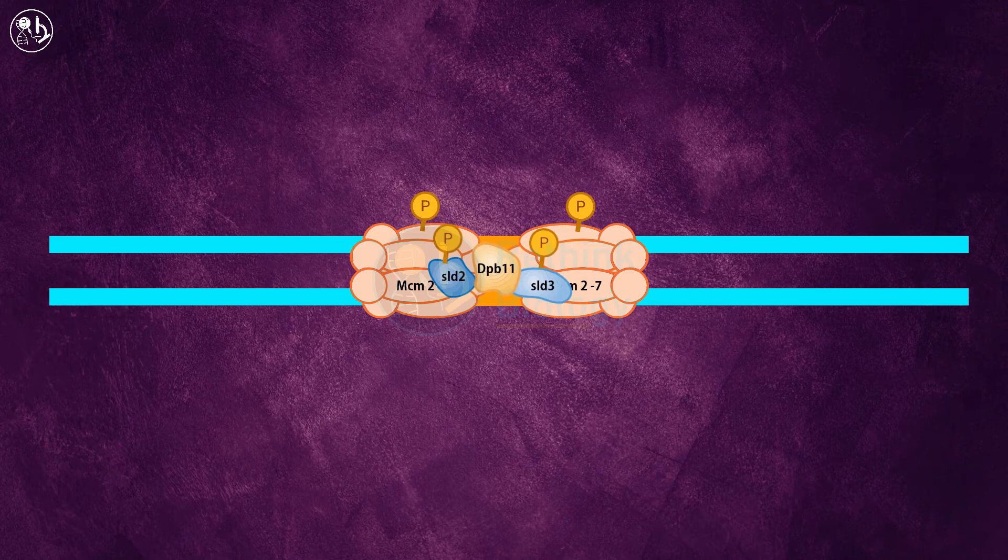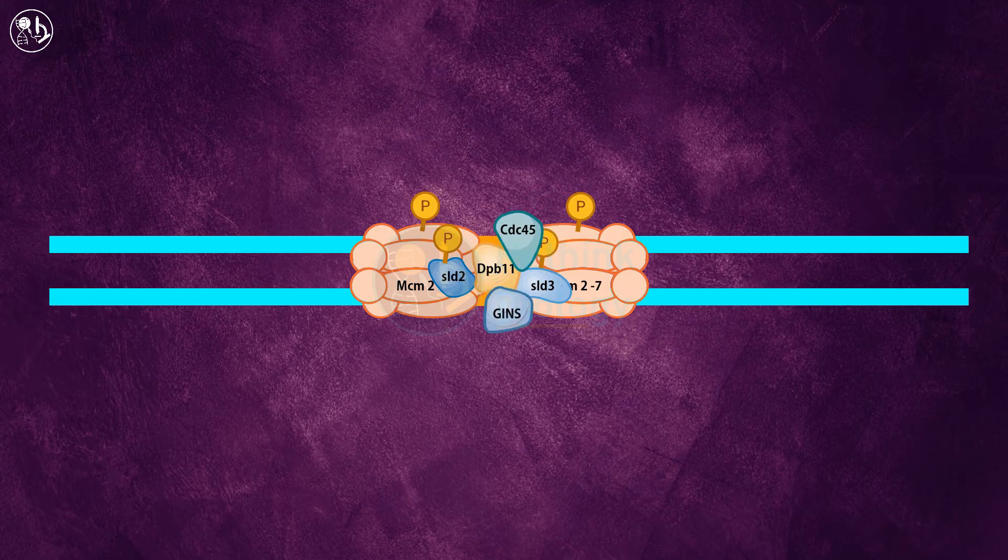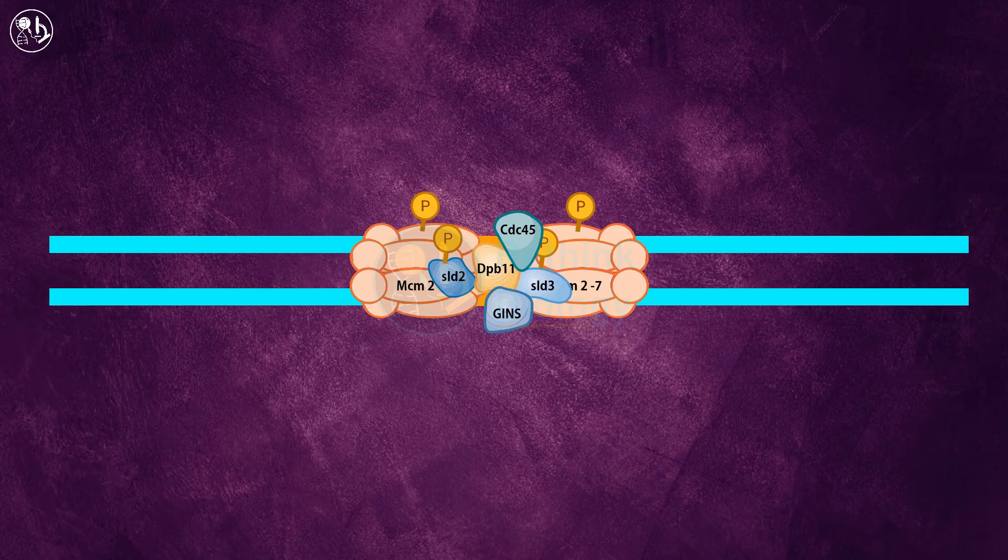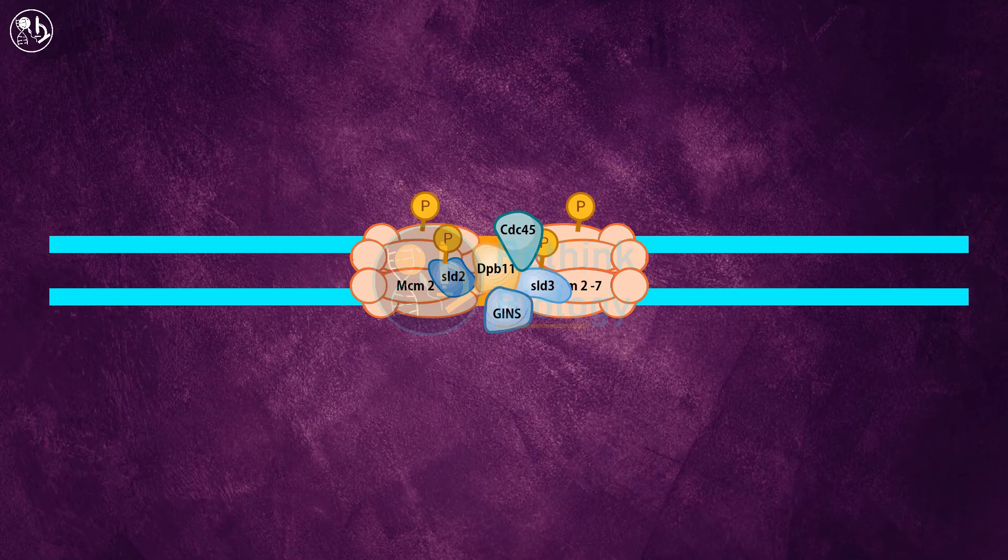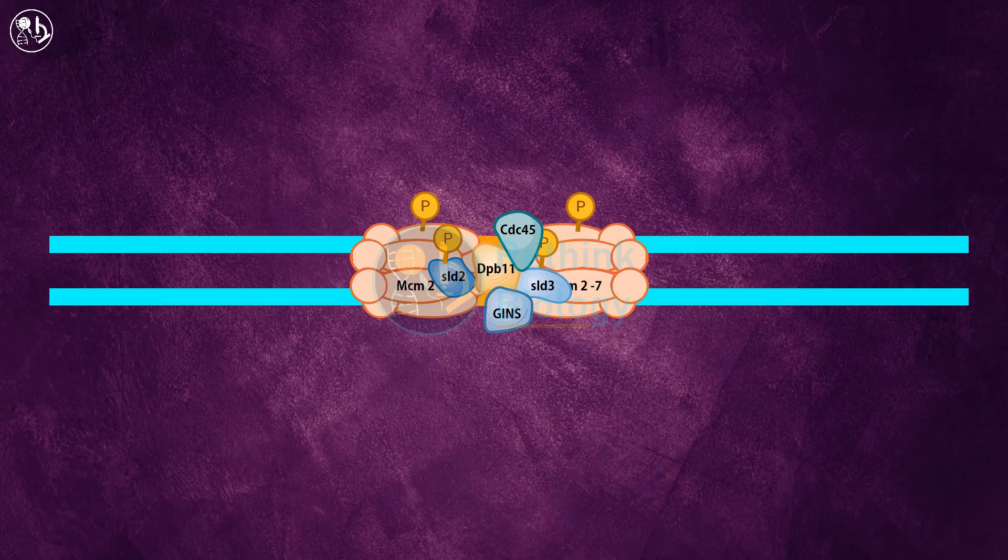This facilitates the binding of helicase activating proteins CDC45 and GINS to the complex. Now the CDC45 and GINS form a stable complex with the MCM2-7 helicase, which is called the CMG complex. This complex dramatically activates MCM2-7 helicase activity.